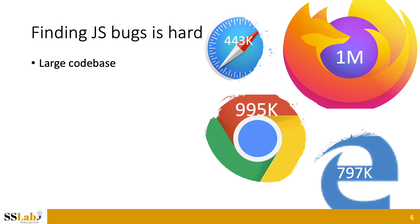So we all understand how severe this is. However, finding JavaScript bugs is hard in reality for several reasons. First of all, JavaScript engine codebases are very large. The smallest one, JavaScriptCore for Safari, has almost 450k lines of code, and the largest one, SpiderMonkey for Firefox, has 1 million.